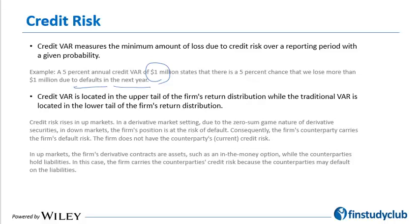Credit VAR is located in the upper tail, unlike traditional VAR which is associated with downside risk and located in the lower tail. This is easy to understand: if I have a derivative position and I happen to lose, there is no credit risk I'm exposed to — it's the counterparty that is exposed. I would be exposed to credit risk only if I'm gaining in the contract, because that's when the counterparty owes me value. So credit VAR is located on the upper tail.